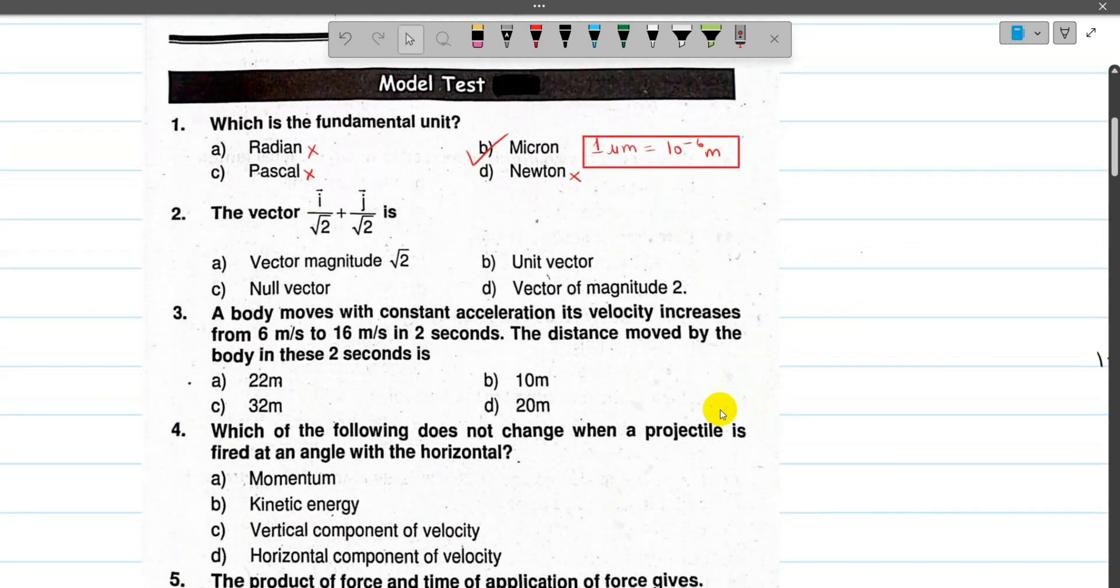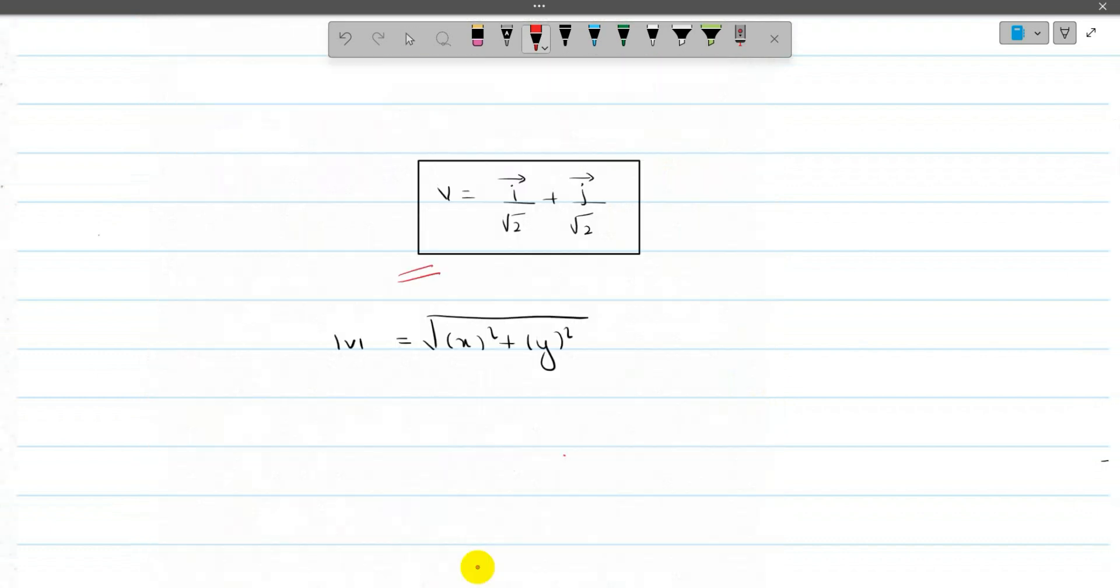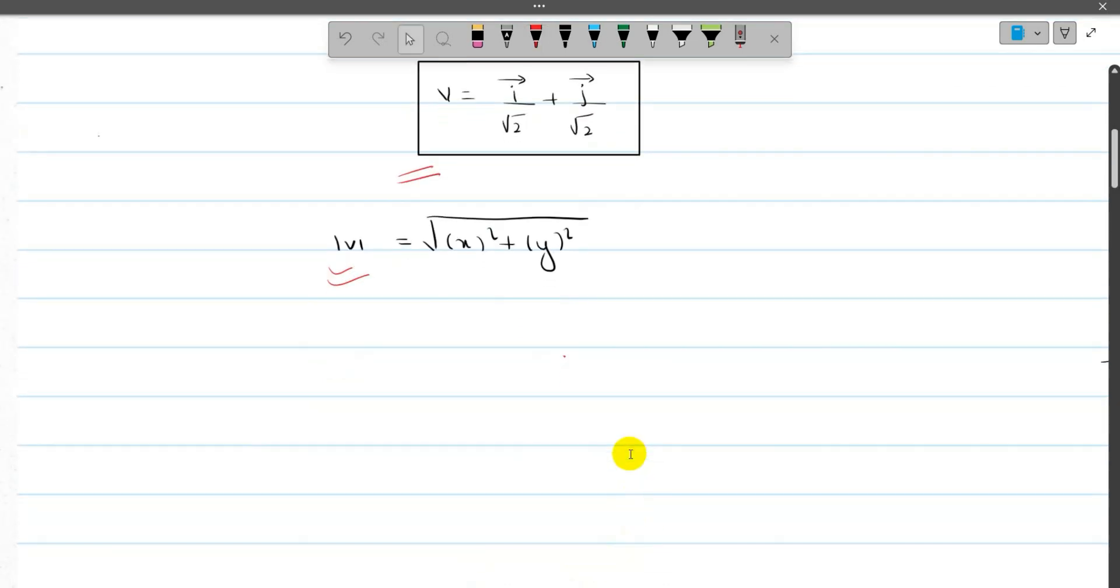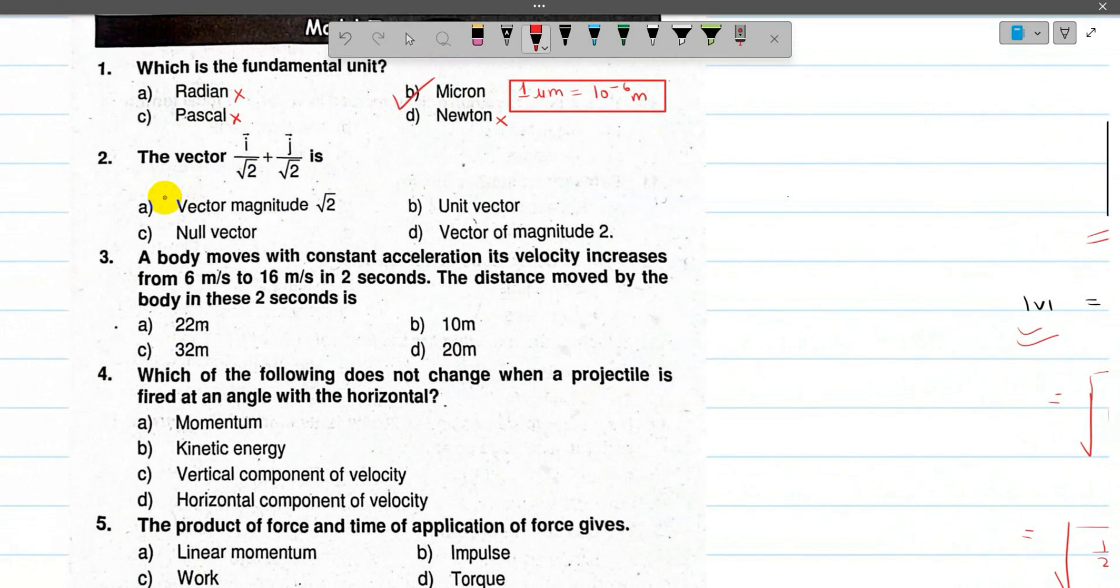And for question 2, we have a vector. This is the magnitude calculation. So let's find out. The given vector is this. The magnitude formula is under root x component whole square and y component whole square.